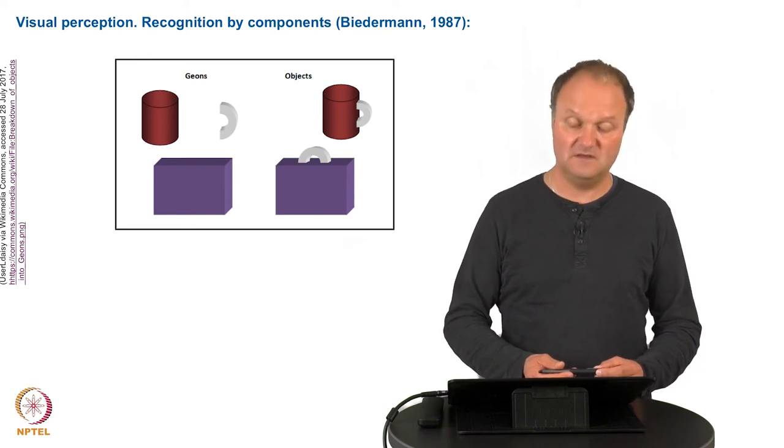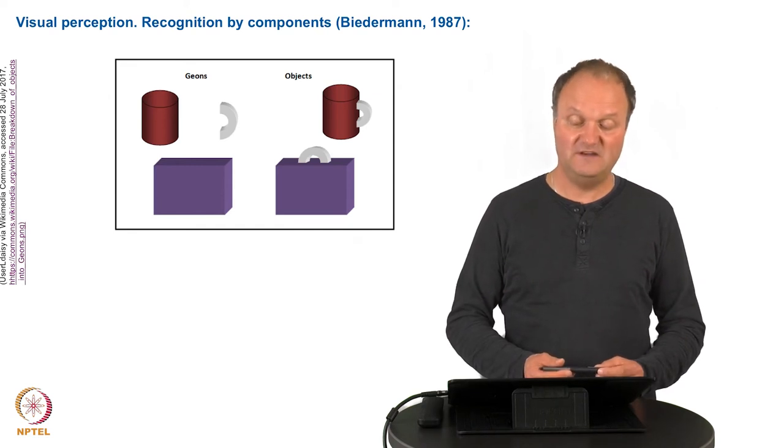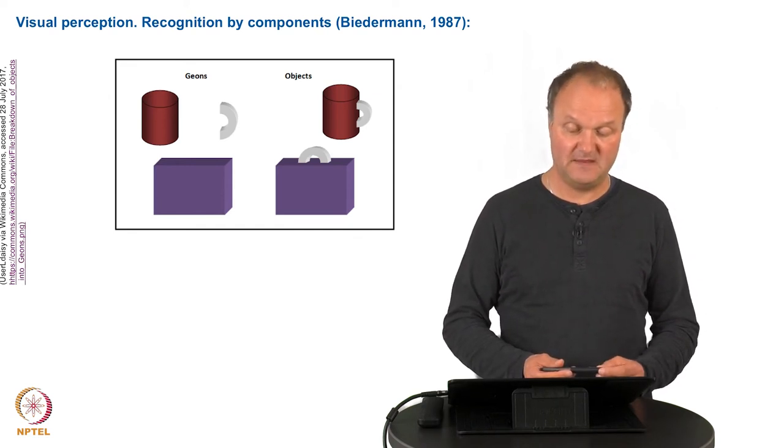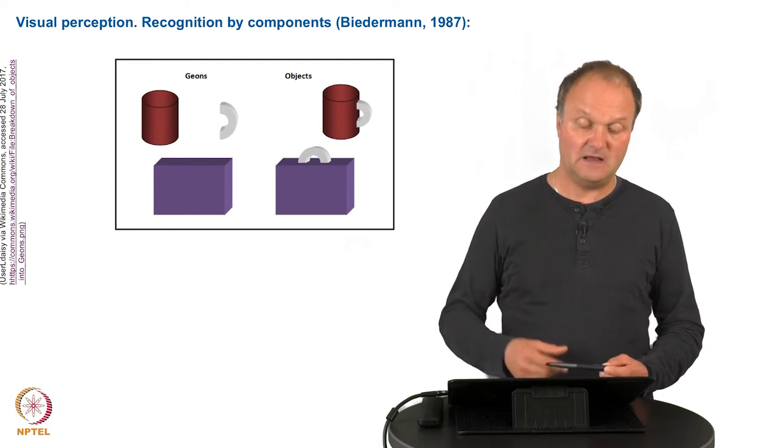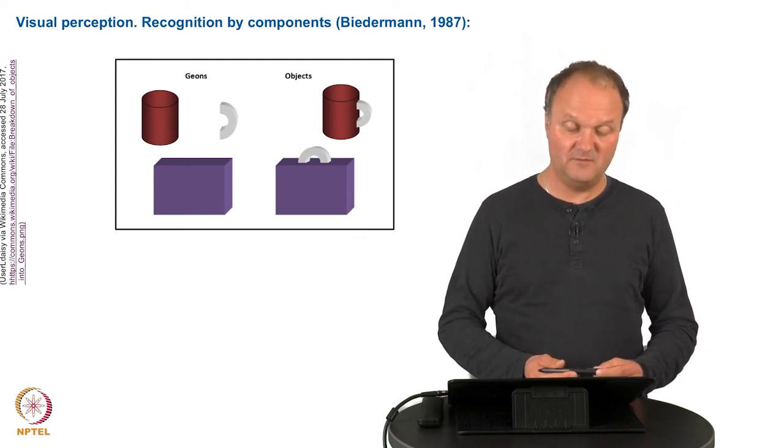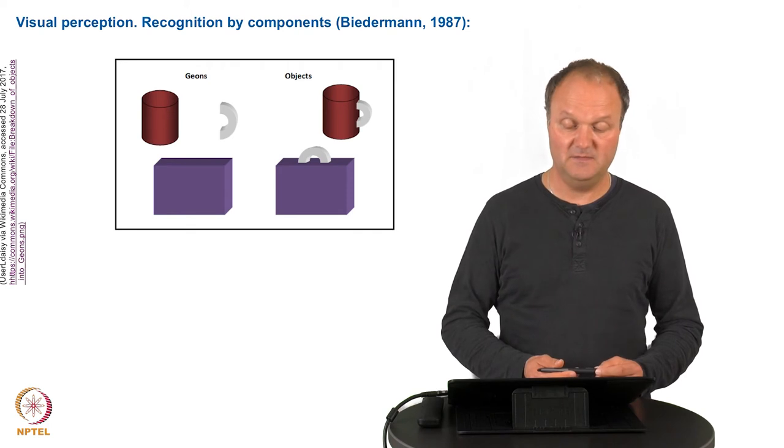Here objects seem to be recognized by volumetric features which are called geons, and the theory proposes that there are approximately 36 geons that may be combined to make more or less all 3D objects we could think of. And you see examples of these objects which can be formed in the panel behind me.